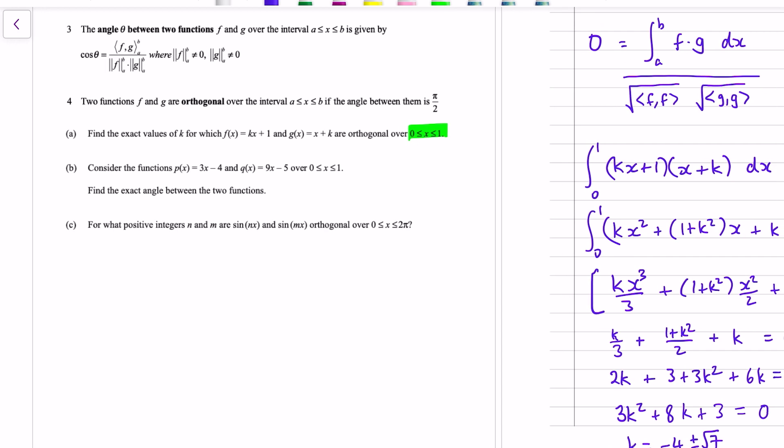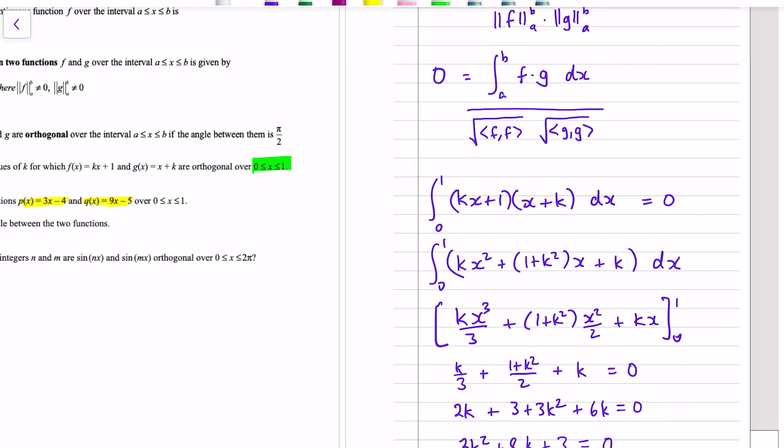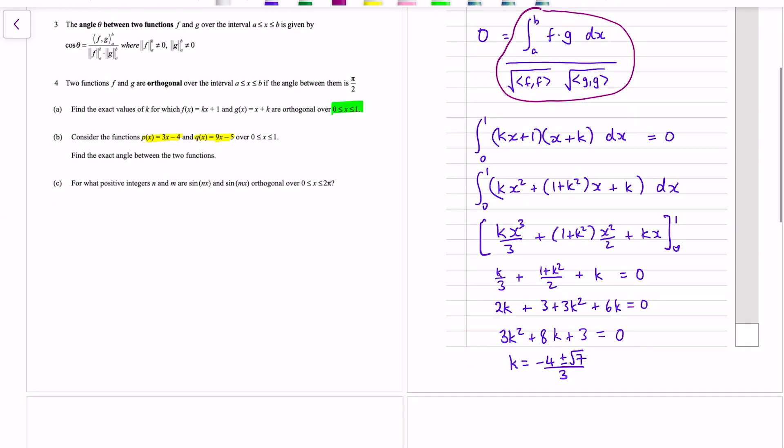There's a whole heap of definitions there, but it turned out we actually only used the inner product equals 0 idea because of the angle being pi over 2. So, okay, second one, consider the functions, two new functions now, both linear again, same interval 0 to 1, find the exact angle between the two functions.